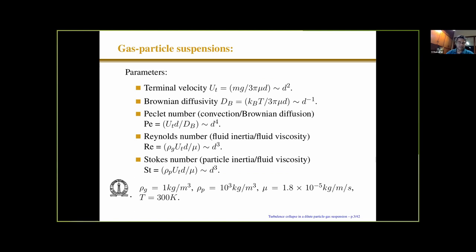The salient feature of these particle-gas suspensions is that the gas phase has a density approximately 1000 times smaller than the particle phase. Therefore, particle inertia can be important but not the inertia of the gas around the particle. The terminal velocity of a particle increases as d-squared, because the drag force is proportional to diameter whereas the weight goes as diameter cubed. The Brownian diffusivity decreases as the inverse of diameter because of the Stokes drag law. The Peclet number goes as d to the 4, the Reynolds number goes as d cubed, and the Stokes number also goes as d cubed. But the Reynolds number is based on gas density and the Stokes number on particle density, giving a factor of about 1000 — the Stokes number is typically about 1800 times larger than the Reynolds number.